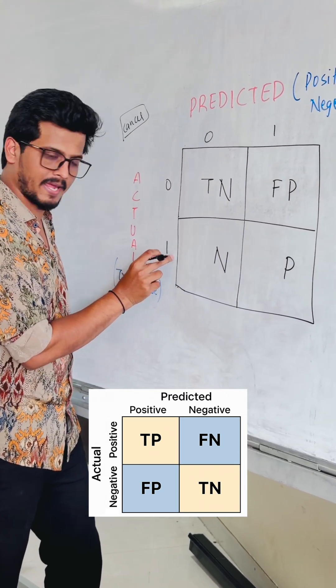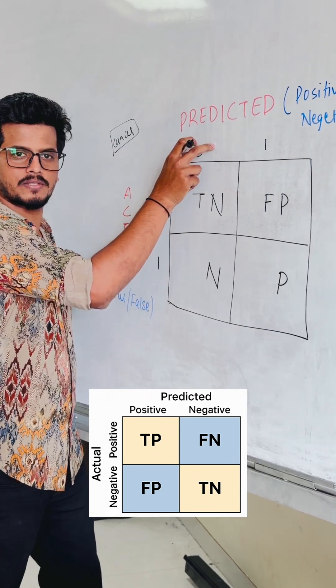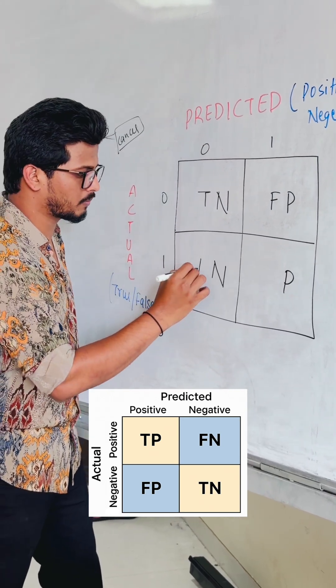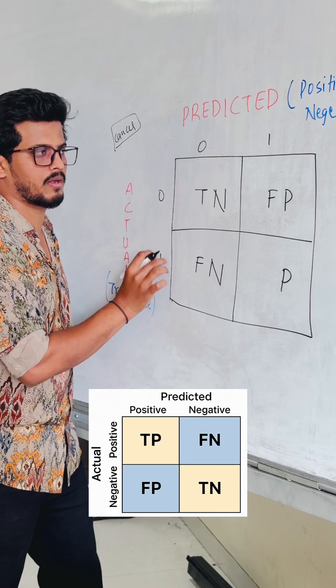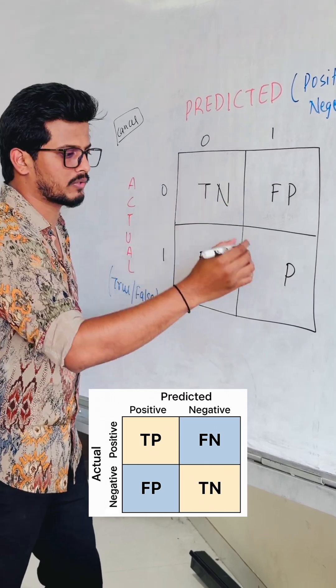Similarly, cancer is in the actual value and predicted it is not cancer. Again, this is wrong. So it has to be F and cancer is in the actual value and predicted it is cancer.